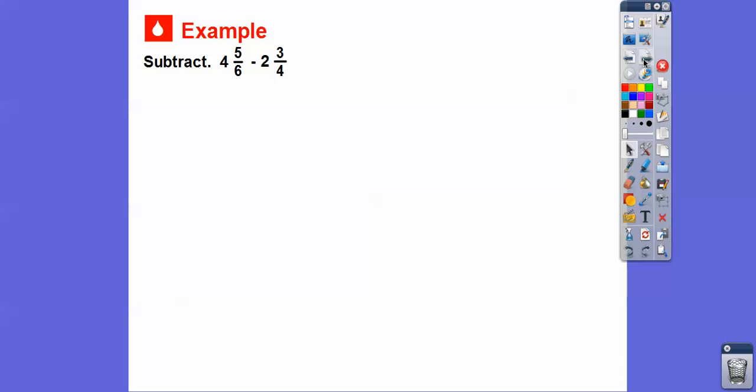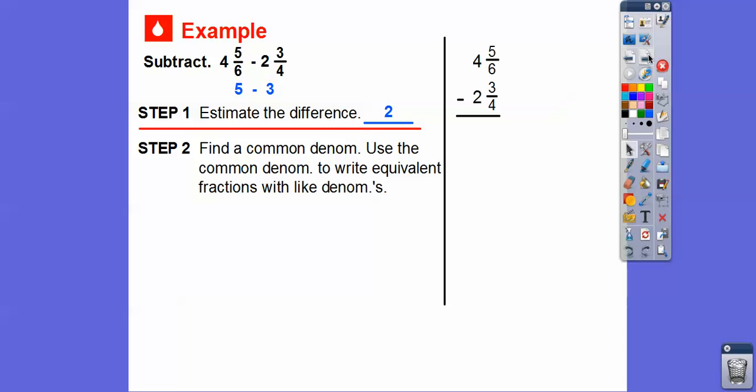4 and 5 sixths minus 2 and 3 fourths. So we've got to get a... Let's estimate first, you guys. So 4 and 5 sixths is close to 5. 2 and 3 fourths is close to 3. So 5 minus 3 is 2. Our answer is going to be somewhere close to 2 right there. So we're going to find a common denominator and then use the common denominator to write equivalent fractions with like denominators.